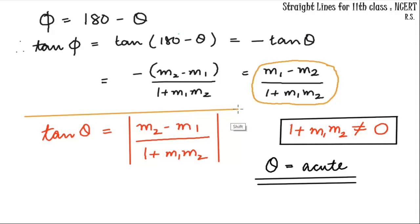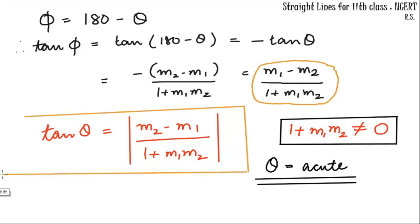Instead of applying both results separately, we can simply use the formula: tan θ = |m2 − m1| / (1 + m1·m2). The modulus ensures this value is always positive, so theta will always be acute. We always use this formula to find the acute angle between two lines, then use that angle to find the obtuse angle if required. The condition is that the denominator (1 + m1·m2) must not equal zero, as that would make tan θ undefined.